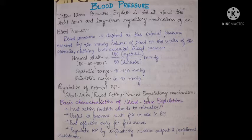What is blood pressure? Blood pressure is nothing but the lateral pressure exerted by the moving column of blood on the walls of the arteries — essentially arterial blood pressure. Normal adults aged 20 to 40 years have a normal systolic pressure of 120 mmHg and a diastolic pressure of 80 mmHg.